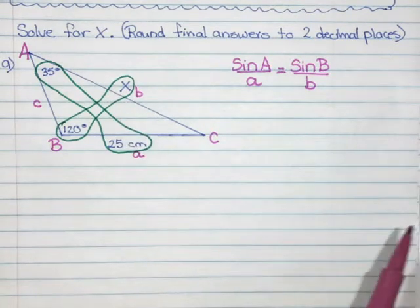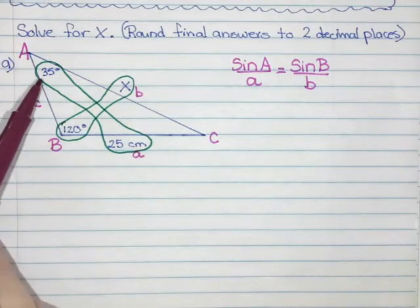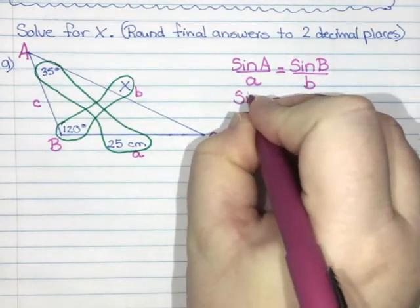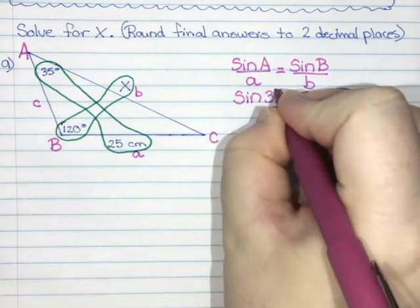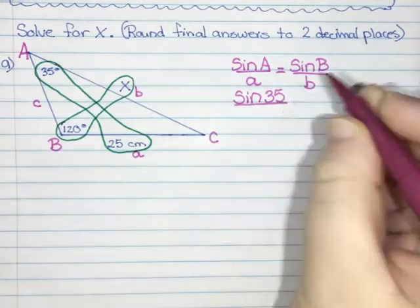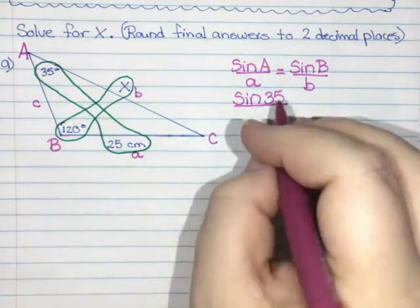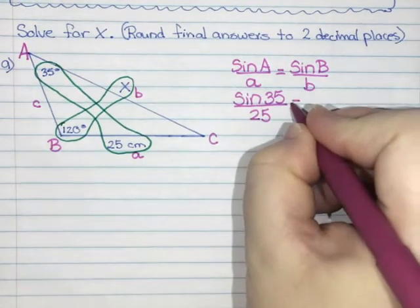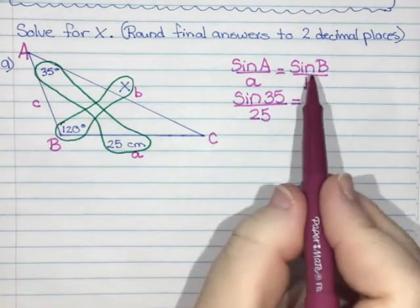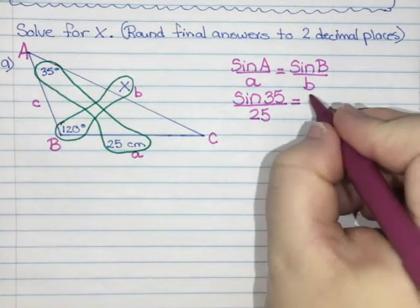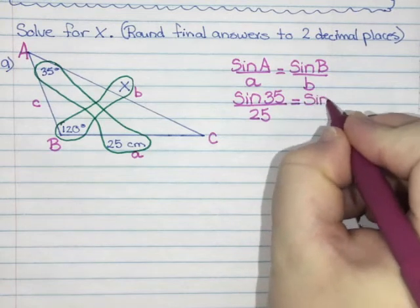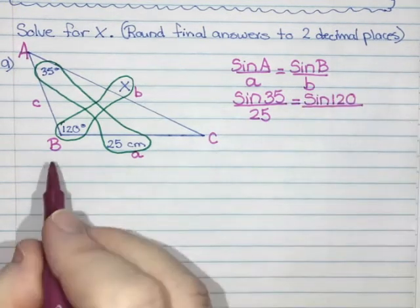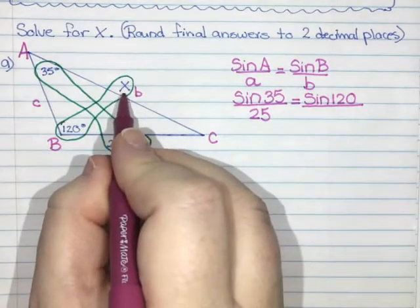Now I need to substitute in my numbers. Angle A is 35 degrees, so I have sine of 35 degrees divided by little a which is 25 centimeters. I'll just put 25. That equals sine of B, which is 120 degrees, so sine of 120 degrees divided by side b which is x.